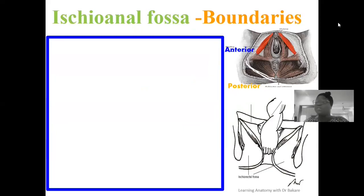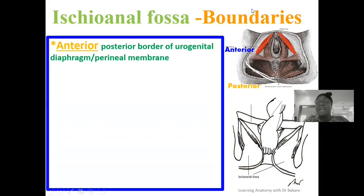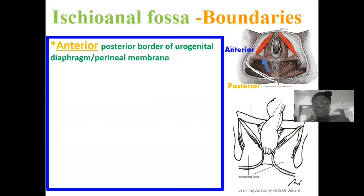Now let's establish the boundaries of the ischioanal fossa. Anteriorly, it is formed by the posterior border of the urogenital diaphragm and also the posterior border of the perineal membrane. The ischioanal fossa is located on both lateral sides of the anal triangle. The anterior pole here aligns with the posterior border of the urogenital diaphragm and the perineal membrane, both of which are located within the anteriorly placed urogenital triangle.